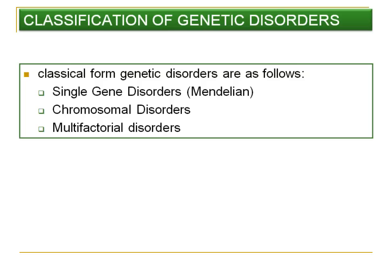Before talking about Autosomal Dominant Disorder, let's see the classifications of genetic disorder. Genetic disorder can be classified into two forms: classical and non-classical. The classical form has three types: single gene disorder, also called Mendelian Disorder; chromosomal disorder, which occurs because of changes in the structure or number of chromosomes; and multifactorial disorder, caused by changes in the gene or environmental effects.